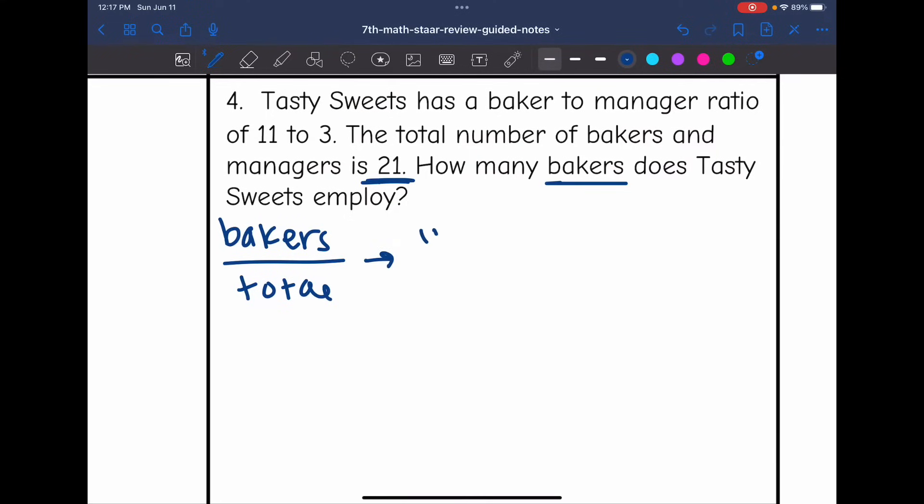So they told us that they have a baker to manager ratio of 11 to three. So they have 11 bakers for every three managers. So the total of that would be 14. 11 out of 14 of those employees would be bakers. And then we can set that equal to, we don't know how many out of the 21 are bakers. So there's our proportion. I can't easily think of a relationship between 14 and 21. So I'm going to go ahead and solve this one with cross multiplication.